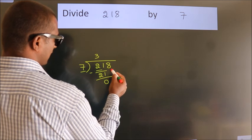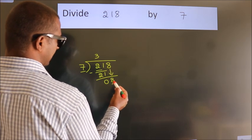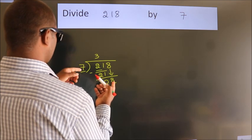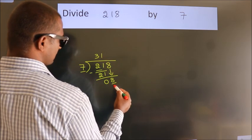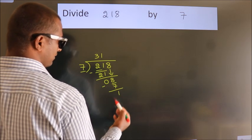After this, bring down the beside number. So 8 down. A number close to 8 in the 7 table is 7 once, 7. Now we subtract. We get 1.